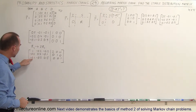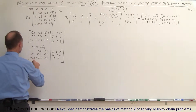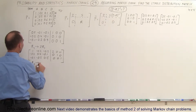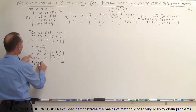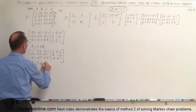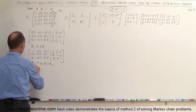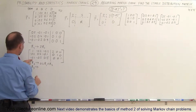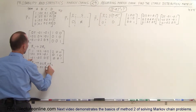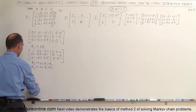Now we want to turn the entries below that 1 into zeros. The technique is: take the second row, replace it by 0.2 times the first row added to the second row. Do the same with the third row — take 0.1 times the first row and add it to the third row. When we do that we get the following matrix.